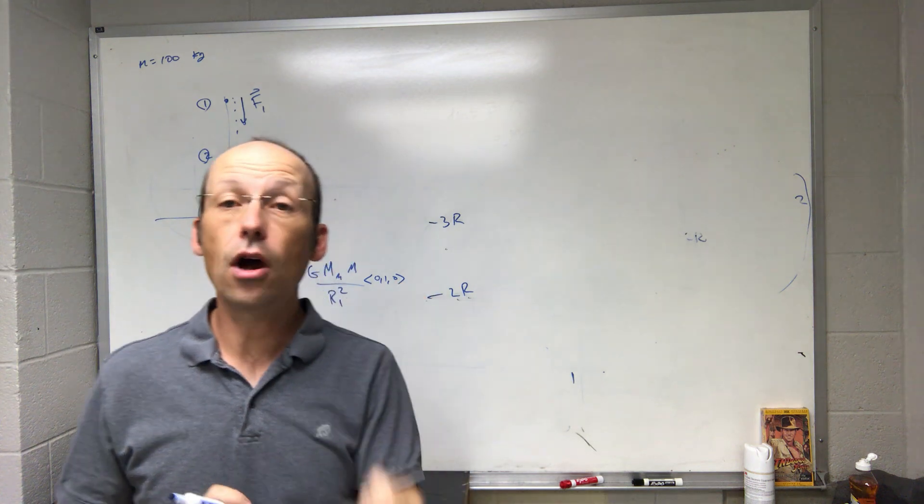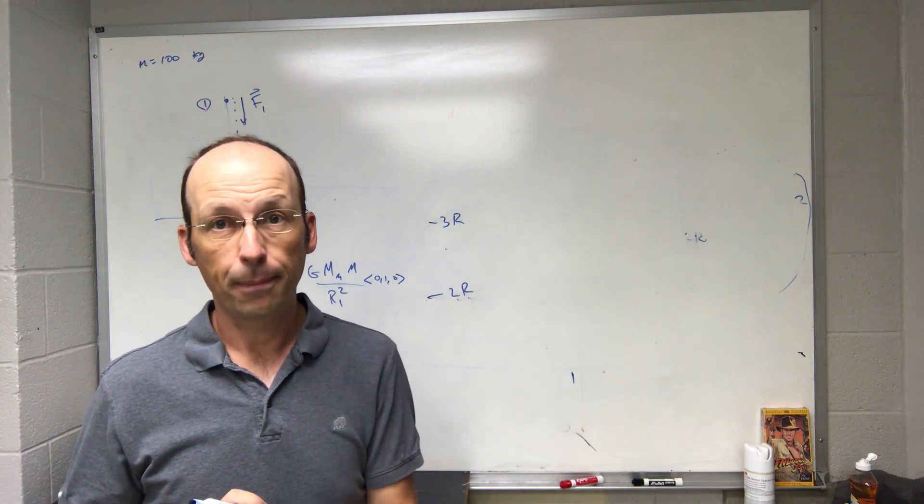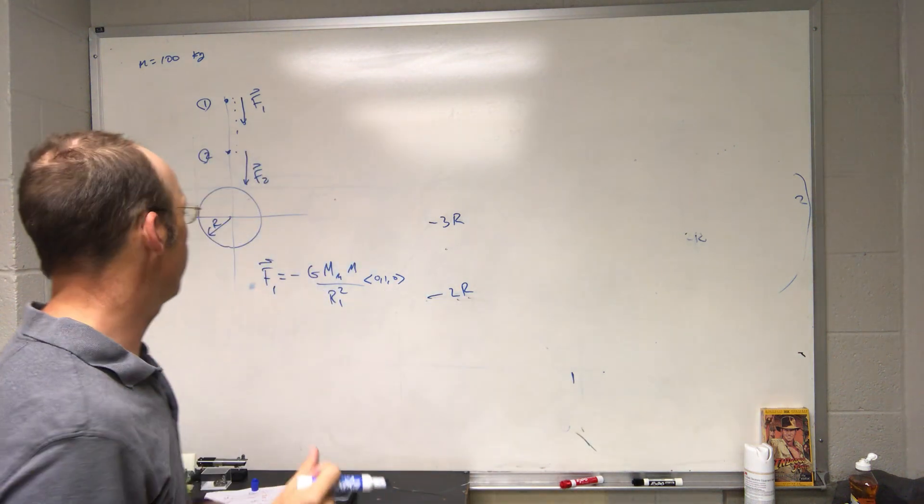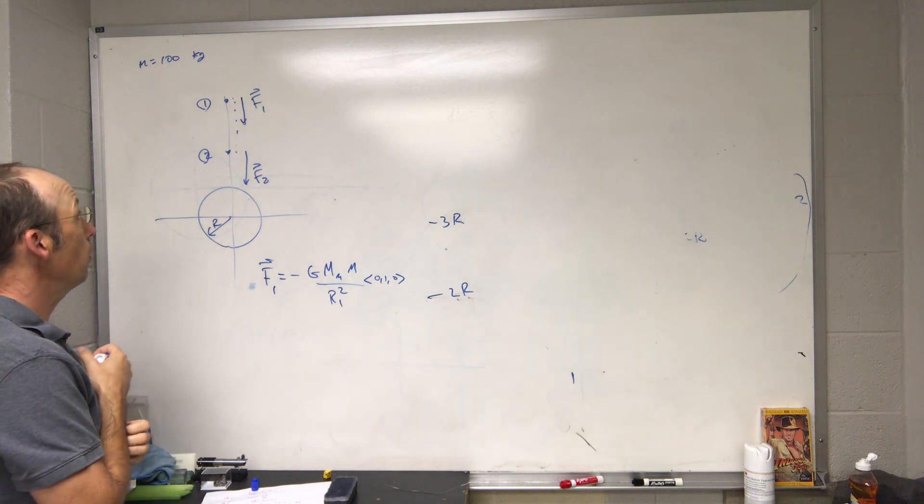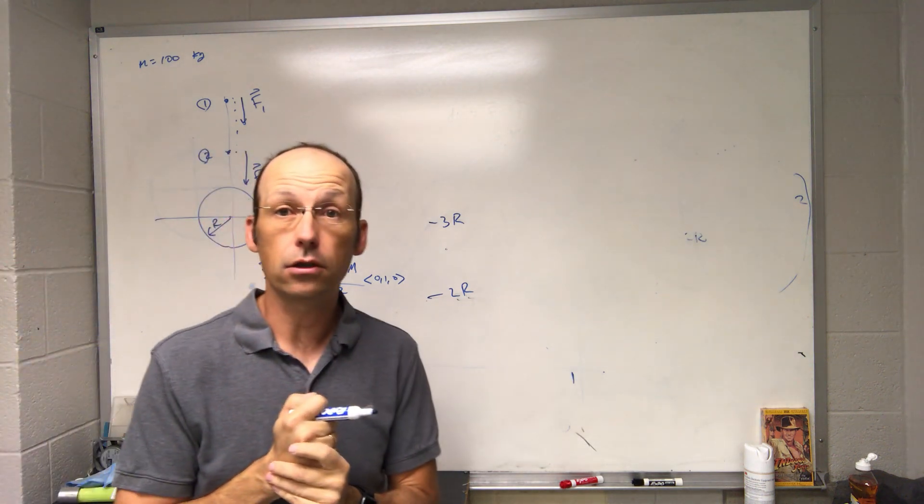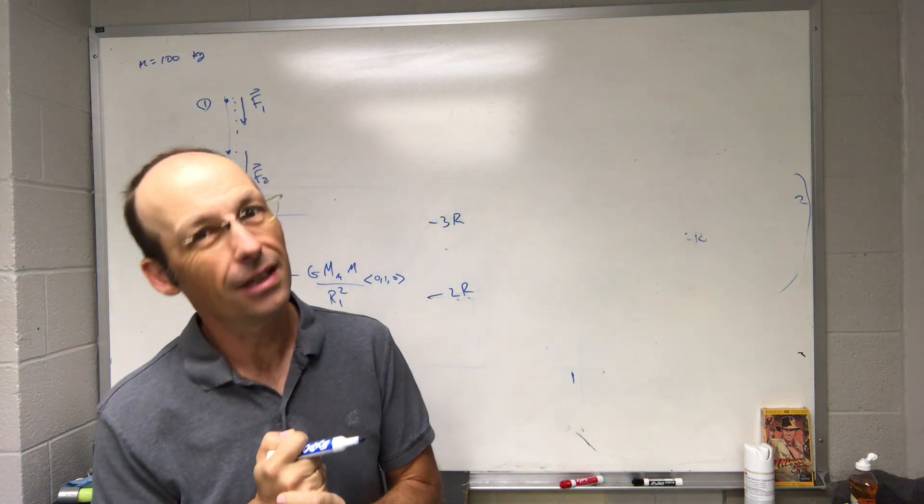So I can calculate that gravitational force. I can also calculate the force F2. And that's the problem, is that I don't have a constant force, so it's going to be really difficult to deal with the situation. When you have difficult situations, the best thing to do is cheat. It's not really cheating, it's just kind of approximating.